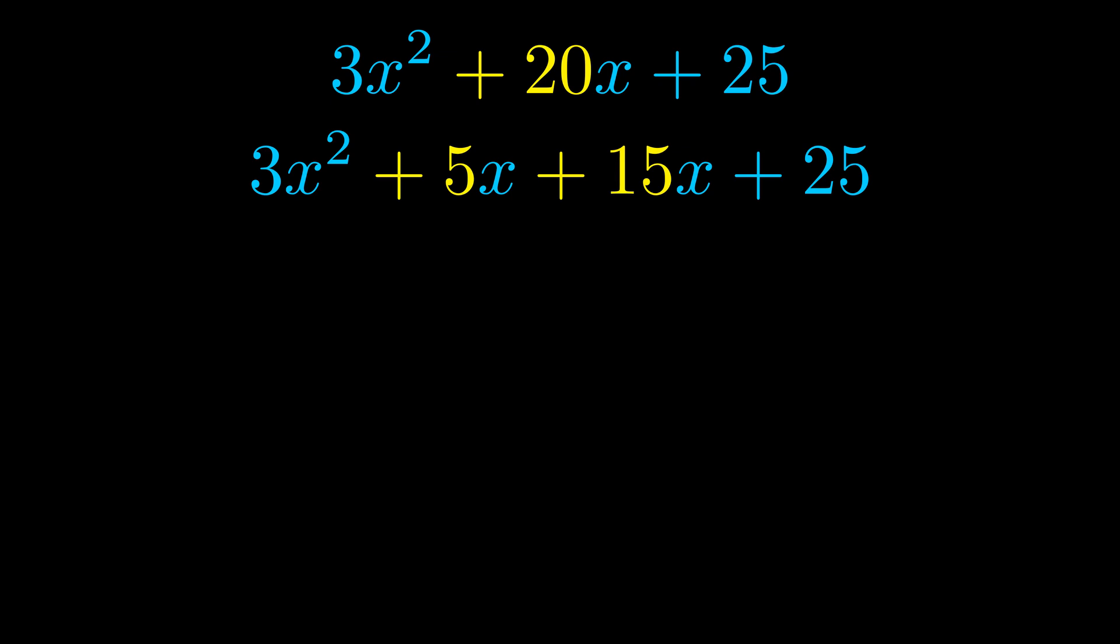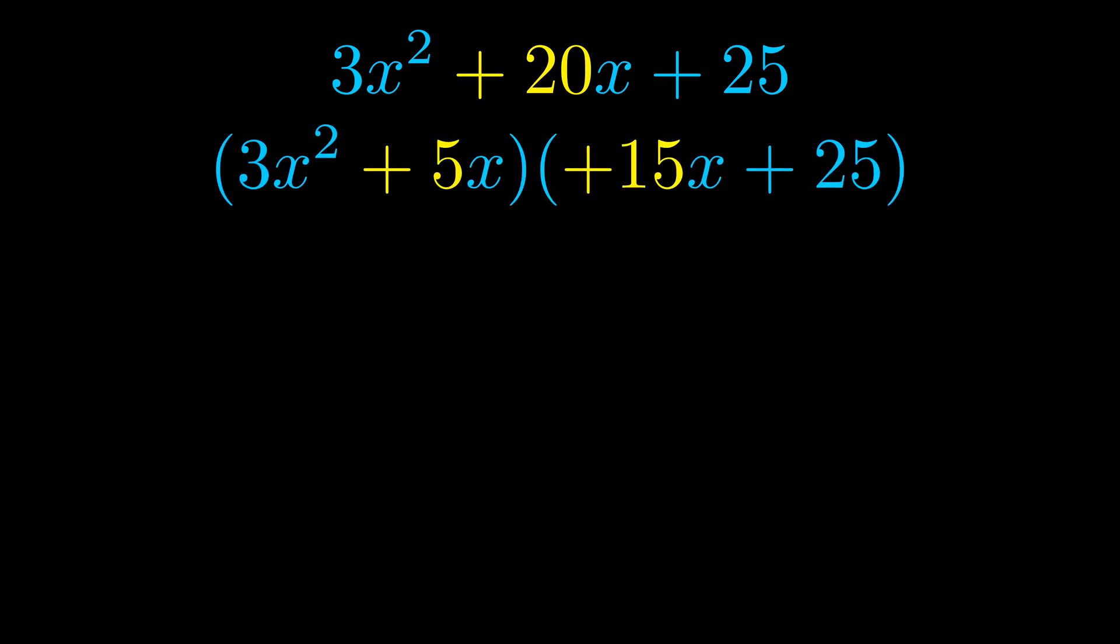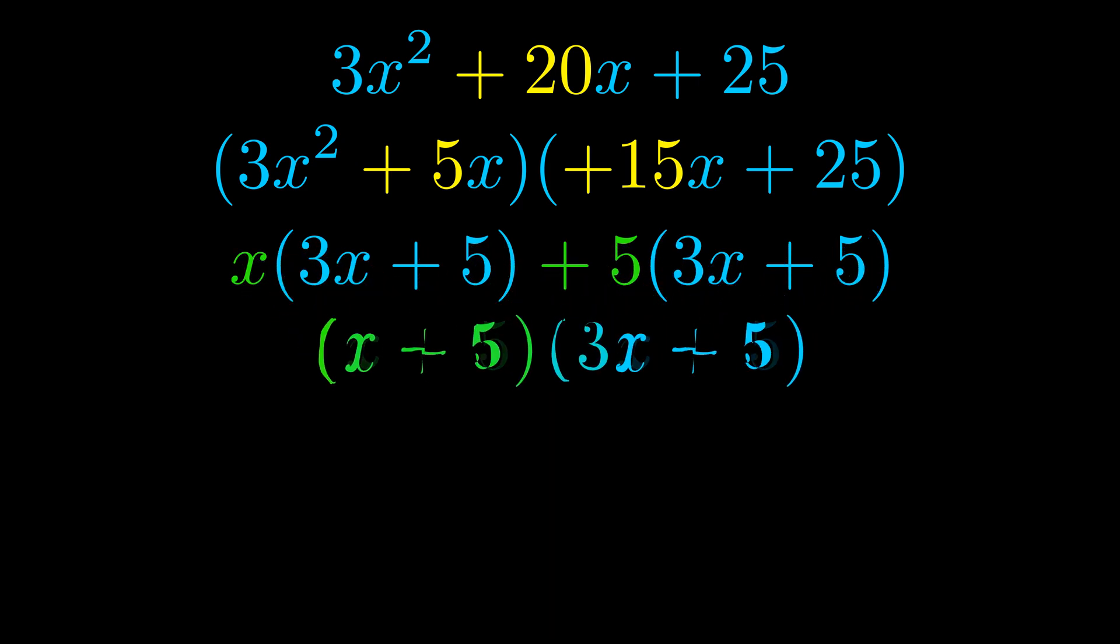Once we've done this we put parentheses around the first term and the last term, and we do that so that we can take the greatest common factor out of both terms. We can see the greatest common factor is now outside in green. Notice also how what remains inside of the parentheses is the same in both cases. The blue values are the same.